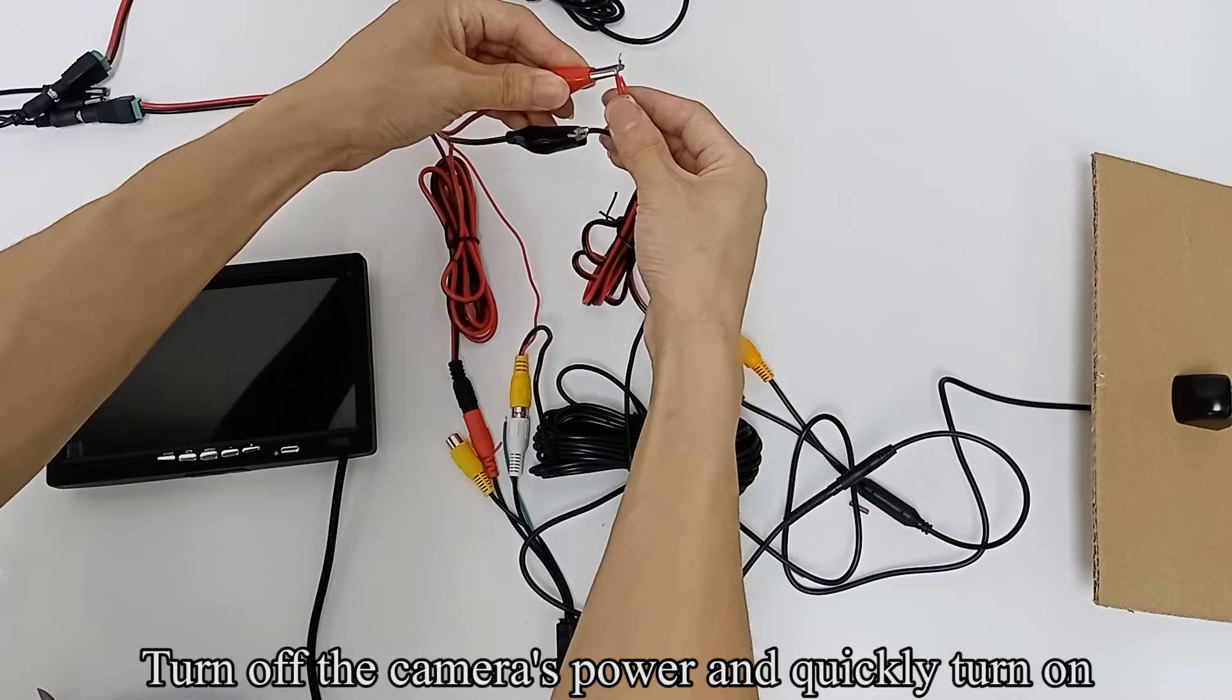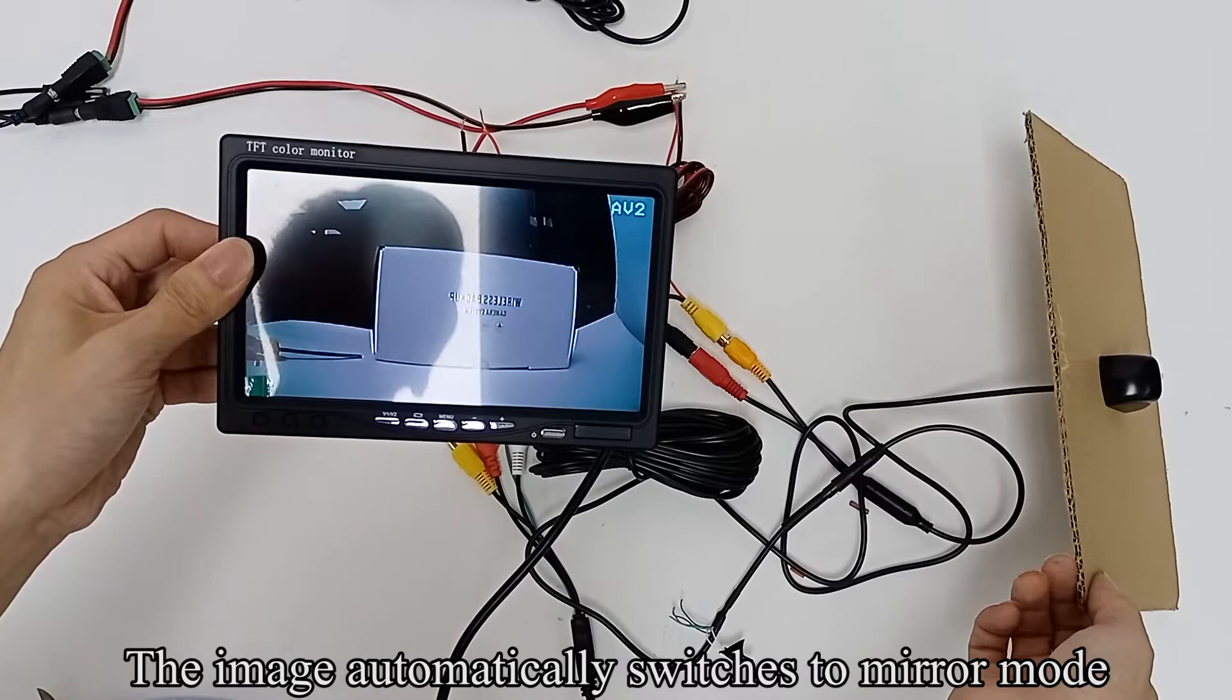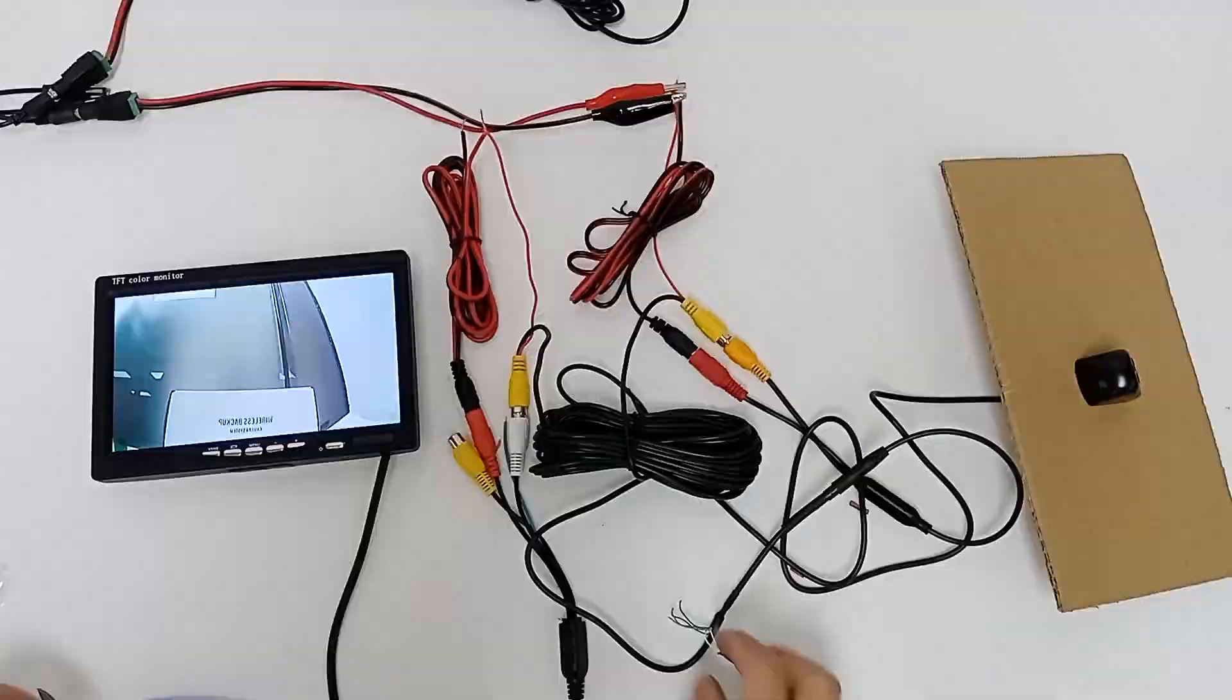Turn off the camera's power and quickly turn it on. The image automatically switches to mirror mode. The same method can be used for the green thin line and the blue thin line.